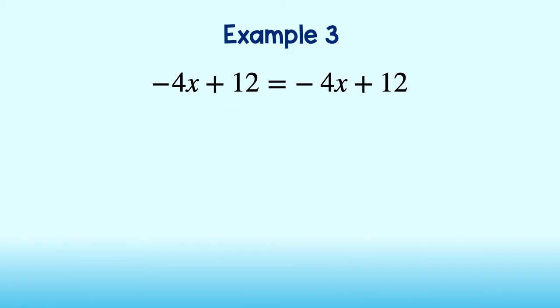Alright, let's try one more. I will try to solve this equation for x. I will first subtract 12 from both sides to get negative 4x equal to negative 4x. Then, I will divide both sides by negative 4 to get x equal to x.